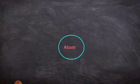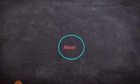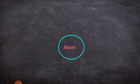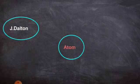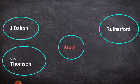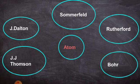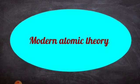In BC, a Greek philosopher came up with an idea about the atom. But the theory was a failure because it was based on philosophy, not on science. Then John Dalton, J.J. Thompson, Rutherford, Bohr, and Sommerfeld came up with their ideas about the structure of an atom. There are some drawbacks in their theories. In order to overcome these drawbacks, the modern atomic theory was put forward.